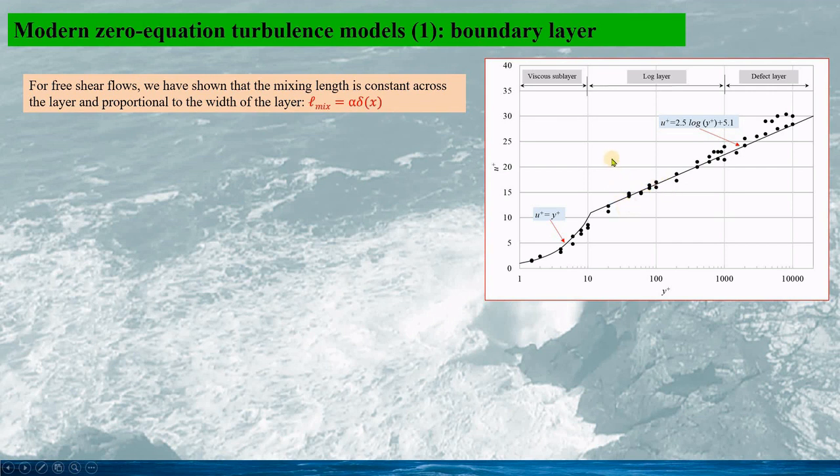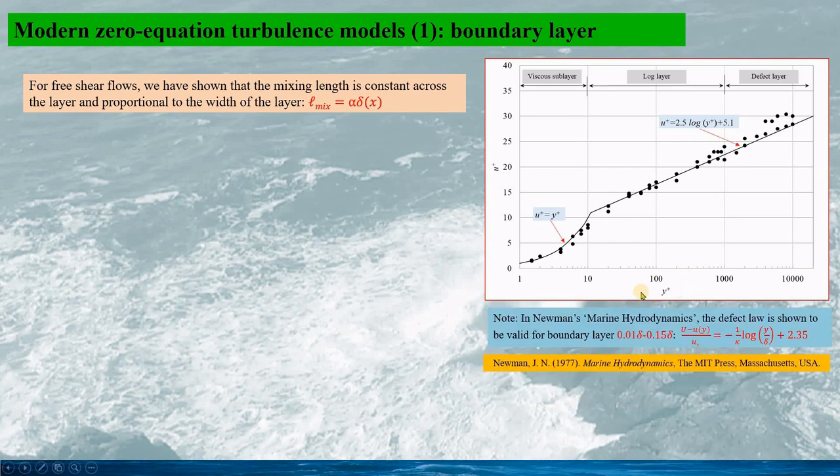Basically, there are three regions: the viscous sub-layer, the log layer, as well as the defect layer. This is a conventional figure in many textbooks. However, the authors found it is confusing for the layer definition. In Newman's book Marine Hydrodynamics, the defect law is shown to be varied within the boundary layer from 0.01 to 0.15 of the boundary layer thickness. The defect law is given by this formula.